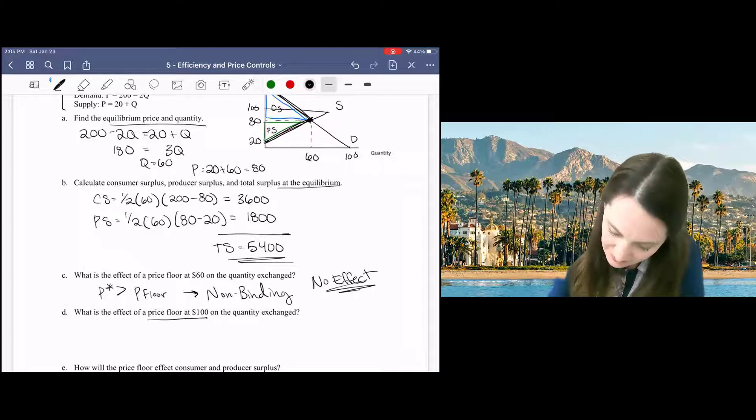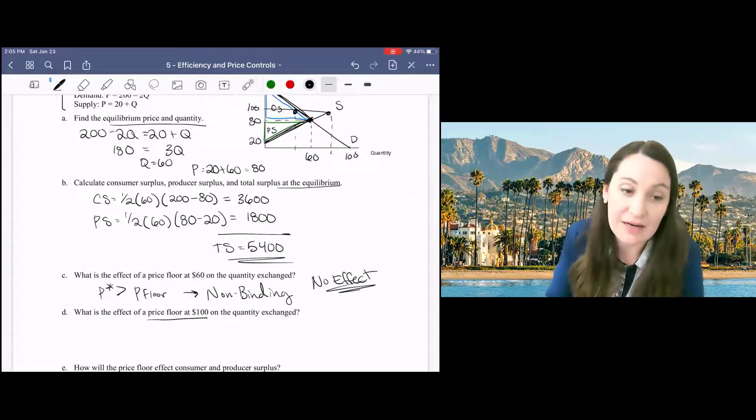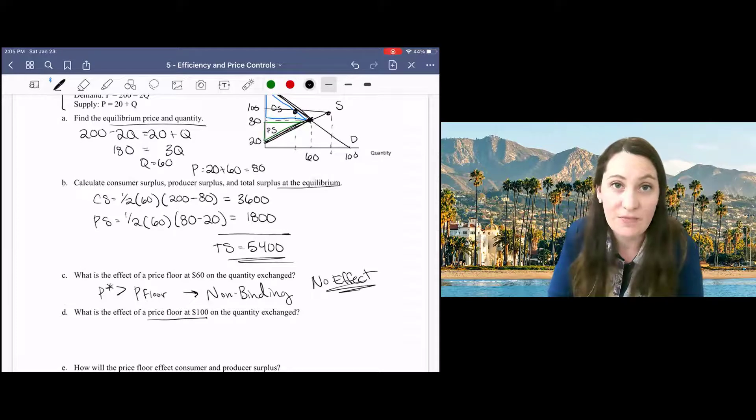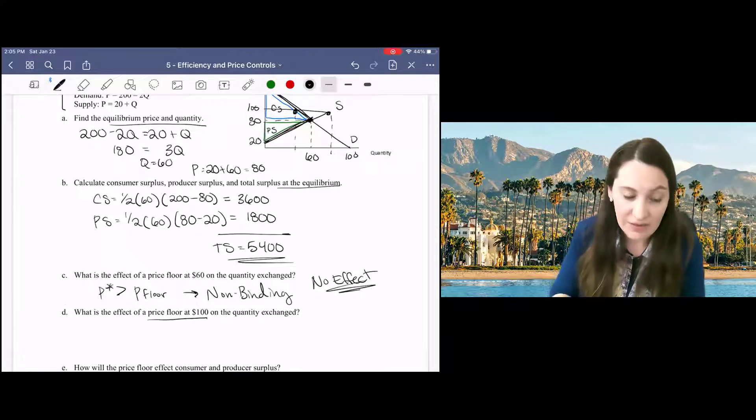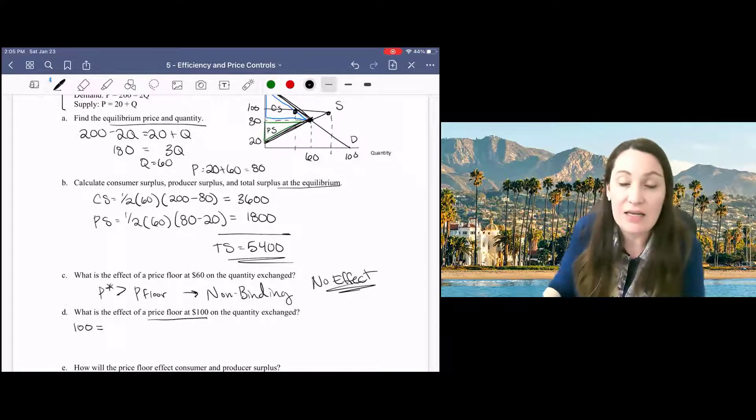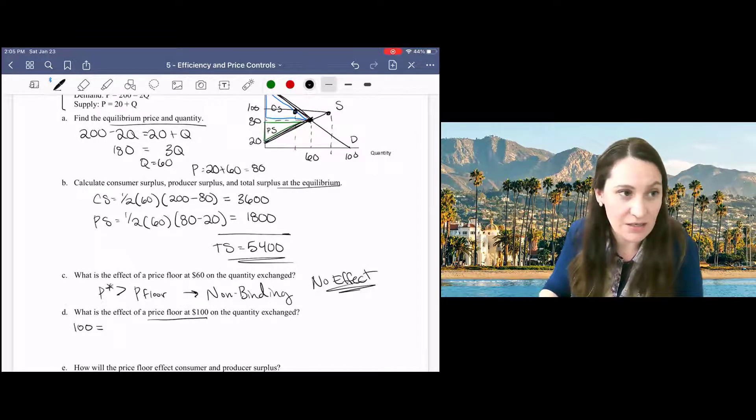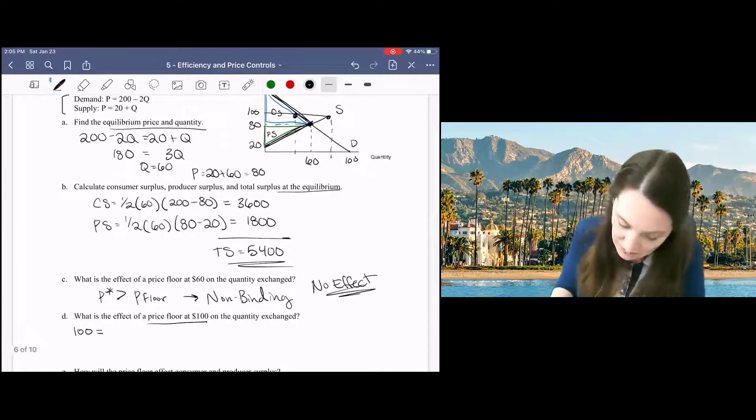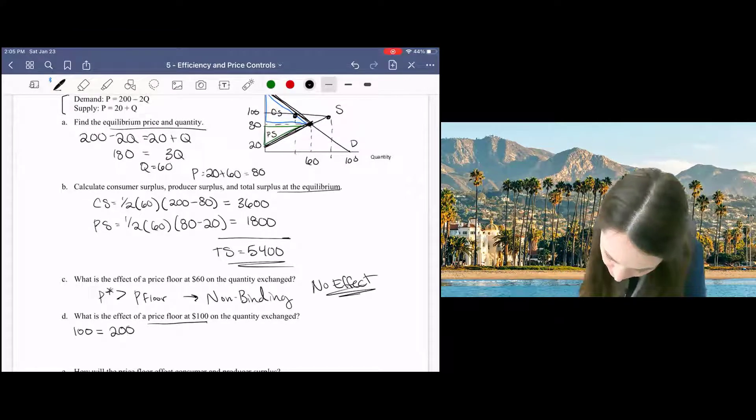And we will have a new quantity demanded and quantity supplied within the market. To find the new quantities, we simply take our price, 100, and plug it into our demand equation and the supply equation.